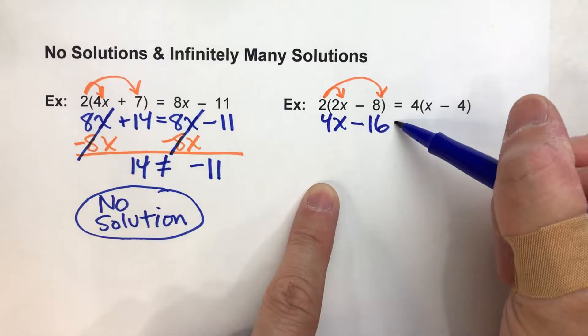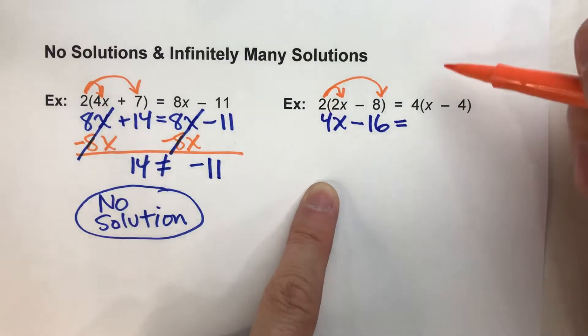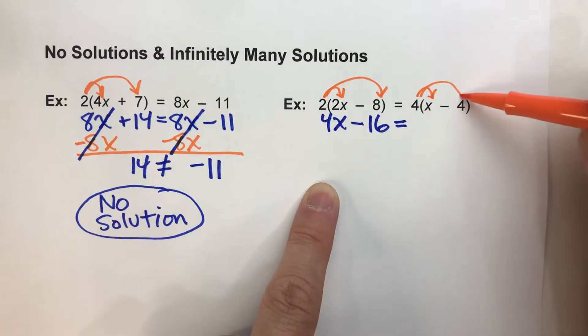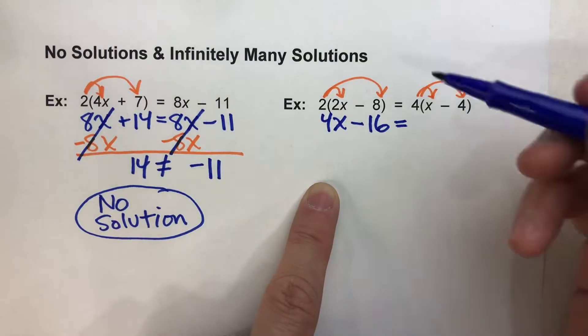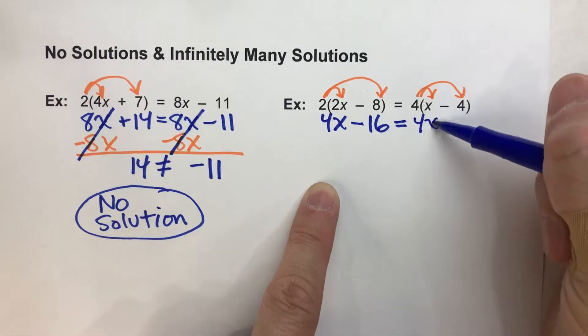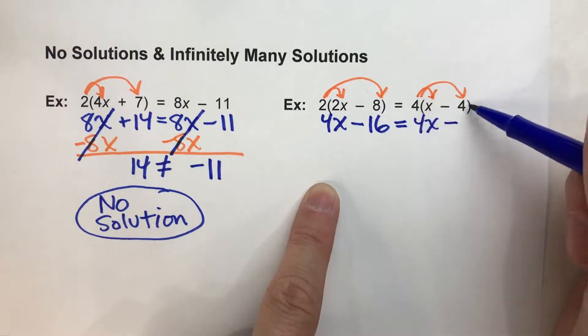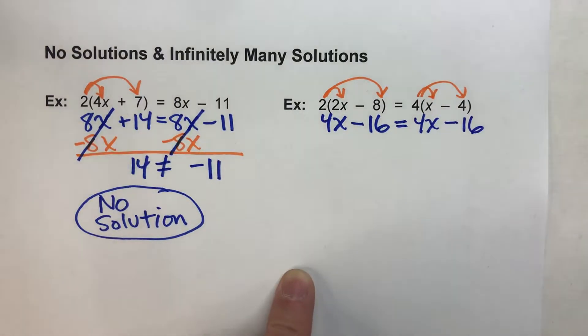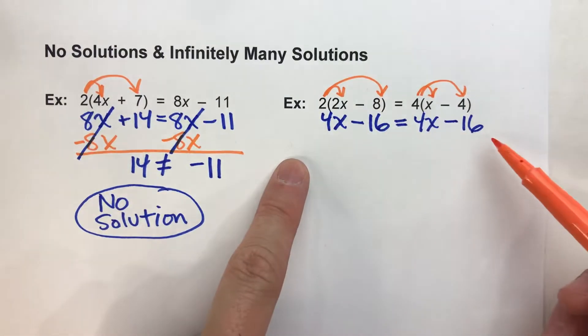2 times 2x is 4x minus 2 times 8 is 16. Now drop down my equal sign. On the other side, again, distributive property because there's parentheses there. 4 times x is 4x minus 4 times 4 is 16.